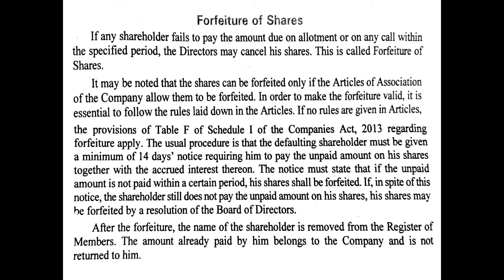After forfeiture, the shareholder's name is removed from the register of members. The amount already paid by the forfeited shareholder belongs to the company and is not returned. Share capital reduces and is debited, because the number of shareholders is decreasing. The amount already paid — for example, application and allotment money — is retained by the company and will not be refunded.